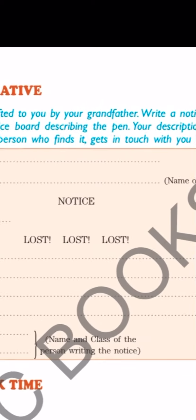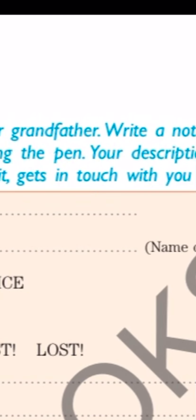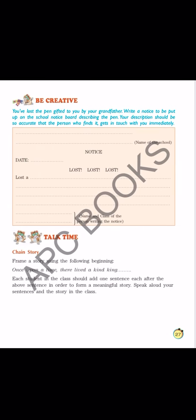Whichever thing is lost - here it is describing the pen. A pen is lost in this notice. So you have to describe your pen: black color pen with golden cap, or a blue color pen with red cap - whatever it is, it is up to you.